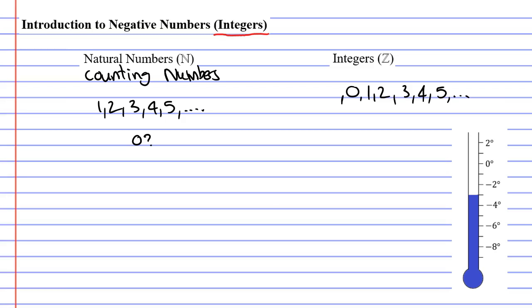But it goes further than that. It goes into your negative numbers. Negative 1, negative 2, negative 3, negative 4, and so on. So why did they decide to extend the natural numbers into the negatives?